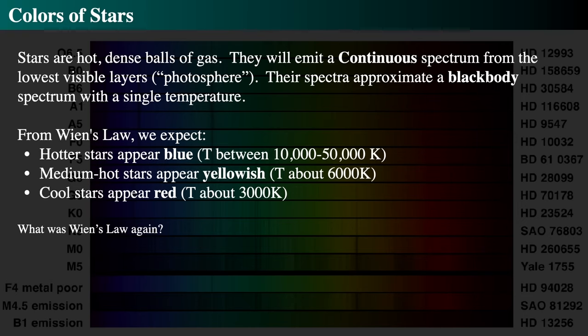Stars actually do have color. If you go outside on a dark night and look at Albireo, which is Beta Cygni, and look through a telescope, you find those two stars — one is gold and one is blue. Stars definitively have color. Stars are basically big hot balls of gas, just the same thing as the sun except really far away. The sun is a million times bigger in volume than the earth and about a hundred earth diameters across. Anything that's really hot and really dense emits a continuous spectrum.